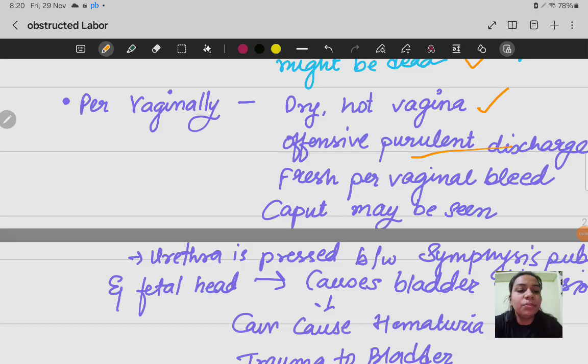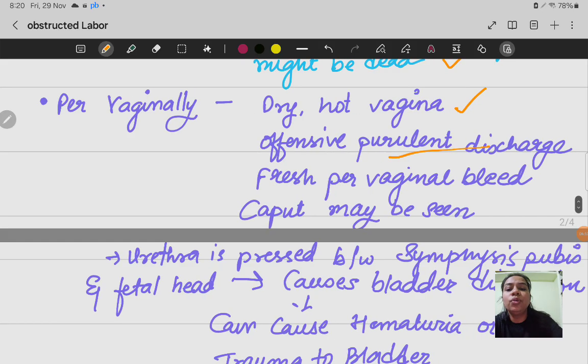Then fresh per vaginal bleeding. Per vaginally mother will bleed and caput may be seen. Caput of the baby can be seen through the canal.